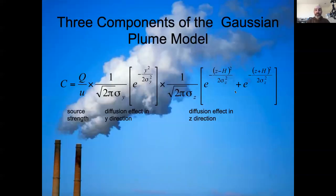Okay, so this shows the same model rearranged a little bit to again emphasize that this Q over u is the source strength. And we have this diffusion in the y direction, and we have this diffusion in the z direction. And both of those are going to depend on downwind direction, downwind distance, which again is just a proxy for time since that particular amount of mass was emitted from the smoke stack.